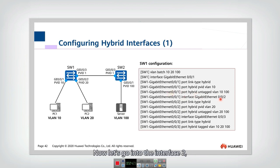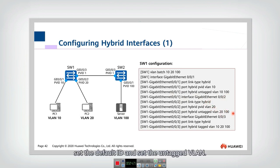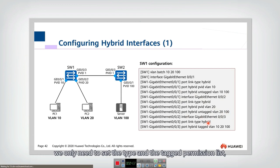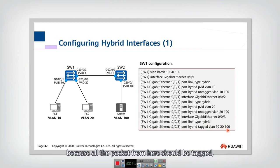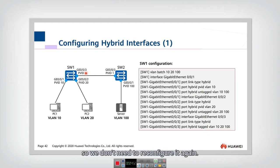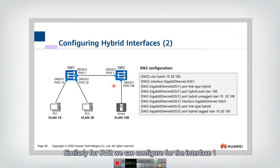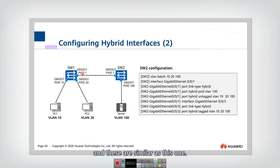For interface two, we similarly set the type, set the default VLAN ID, and set the untagged VLAN list. For interface three, we only need to set the type and the tagged permission list, since all packets from here should be tagged and the default PVID of 1 does not need to be reconfigured. For Switch 2, interface one and interface three are configured in a similar manner to their counterparts in Switch 1.